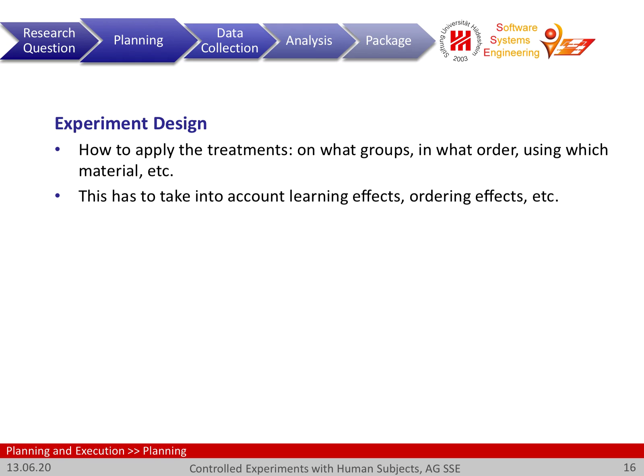In practice, we usually cannot control for all of these possible influential factors, but we try at least to address some of them. So if we do a multitask experiment, then typically we take learning effects into account and have designs where the task order also happens in a flipped manner.